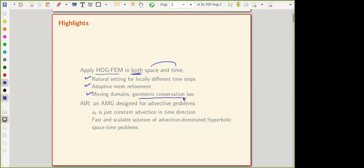How about the solution part? We use AIR, an algebraic multigrid method designed for advection problems. If you think about it, time derivative is just constant advection in time direction. And AIR is a fast and scalable solver for advection dominated and hyperbolic problems. It becomes a fast and scalable solver for advection dominated hyperbolic spacetime problems. That's awesome.